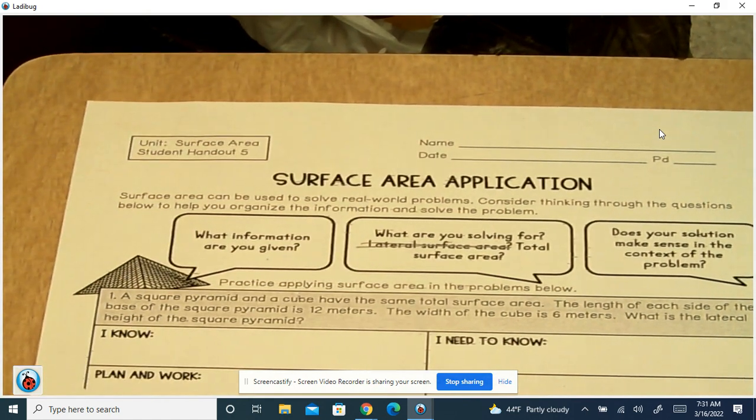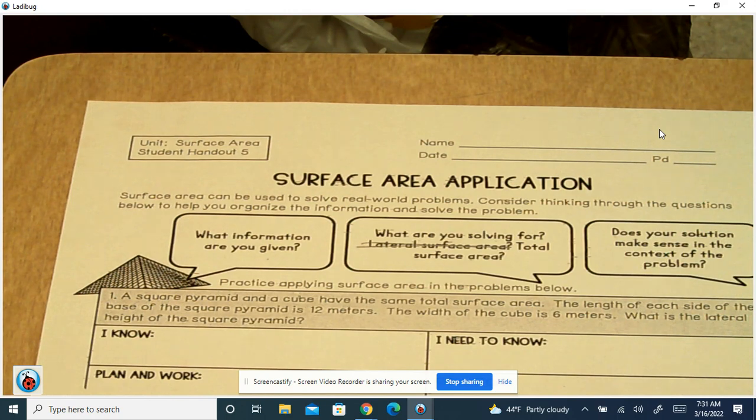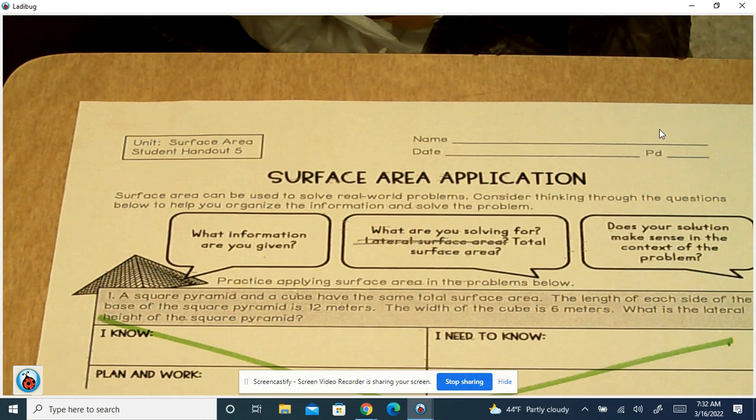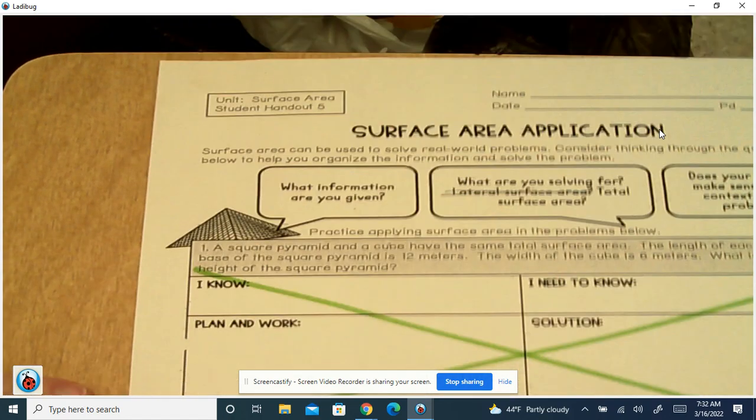Problem number one is lateral surface area so we want to mark it out. We're not going to do that one. We're going to start with number two.